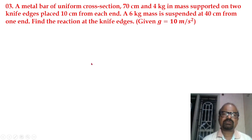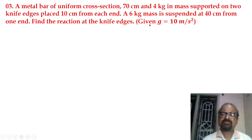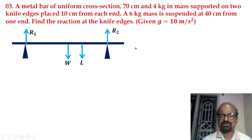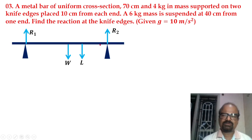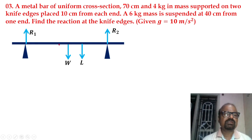Next problem: A metal bar of uniform cross section, 70 cm long and 4 kg in mass, is supported on two knife edges placed 10 cm from each end. A 6 kg mass is suspended 40 cm from one edge. Find the reactions at the two edges. The rod is 70 cm in length, mass 4 kg, and for a uniform rod the center of mass acts at the middle.